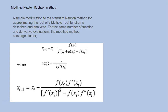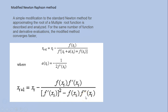Welcome back. This is the last topic in Numerical Analysis Part 2, which is called the Modified Newton-Raphson method — a simple modification to the standard Newton method for approximating the root of multiple-root functions such as x², x³, x⁴. The modified method converges faster. The expression is: X_{i+1} = X_i minus F(X_i) times F'(X_i) divided by [F'(X_i)]² minus F(X_i) times F''(X_i).